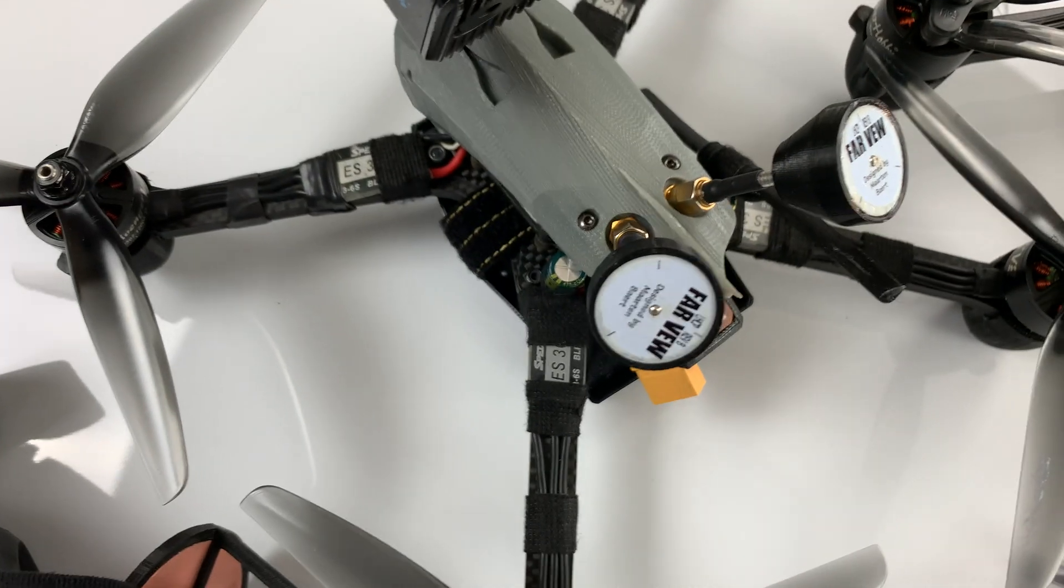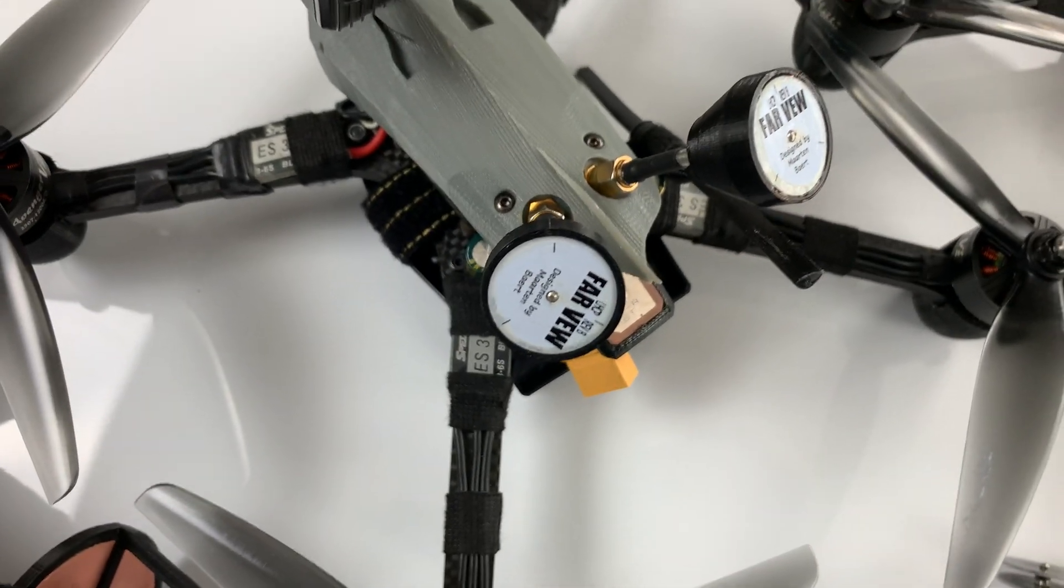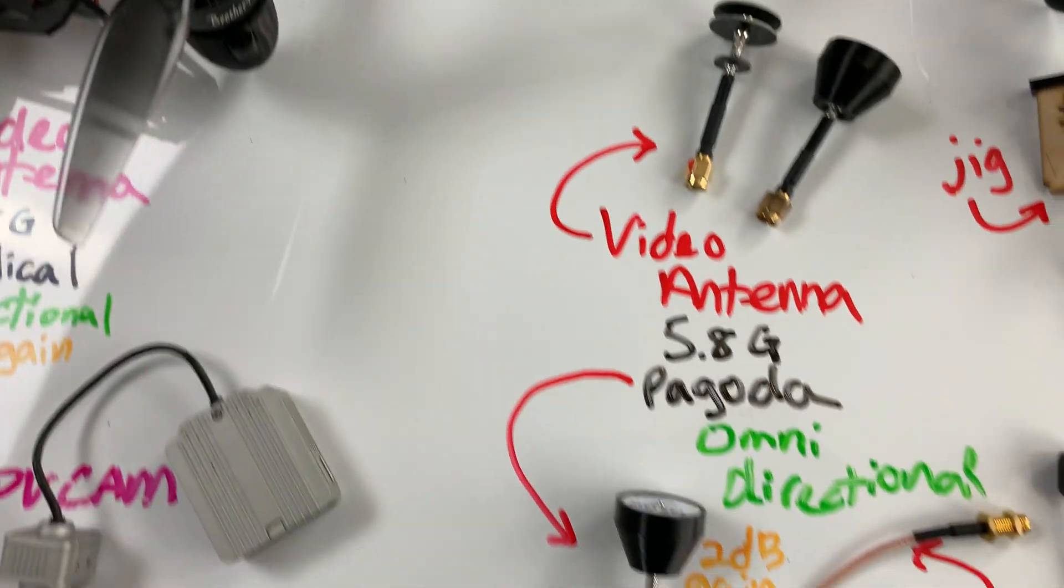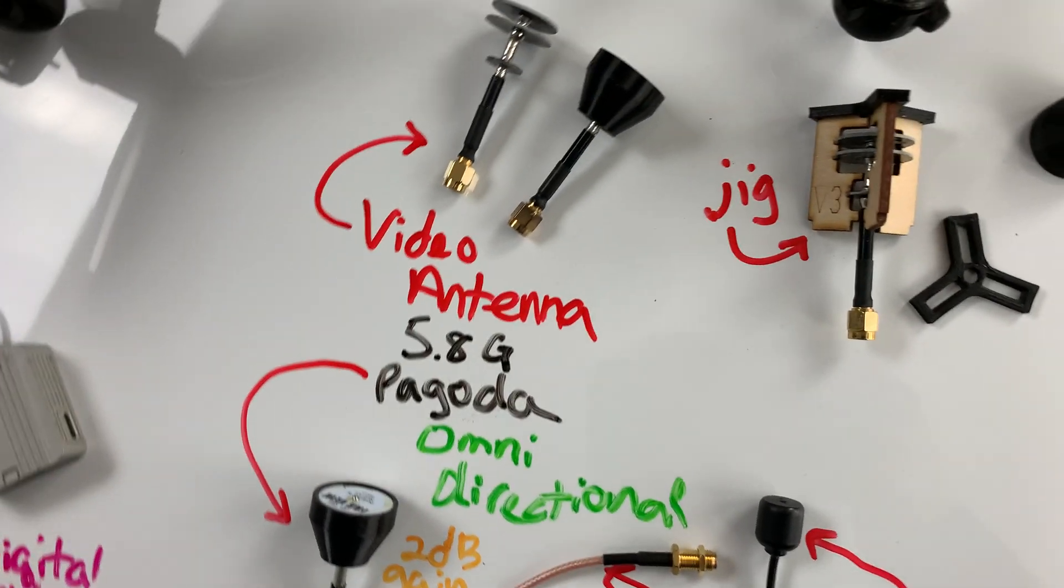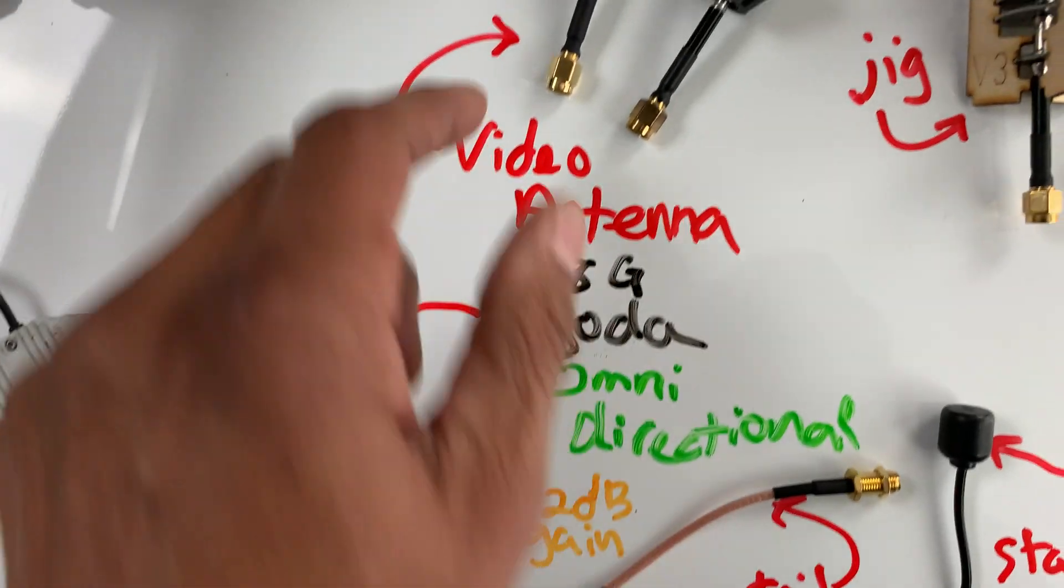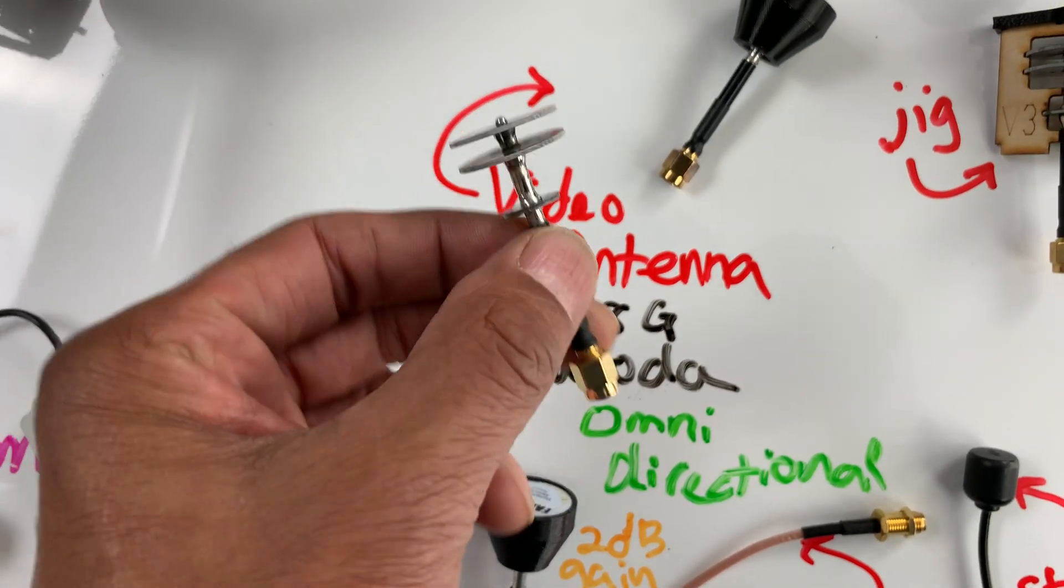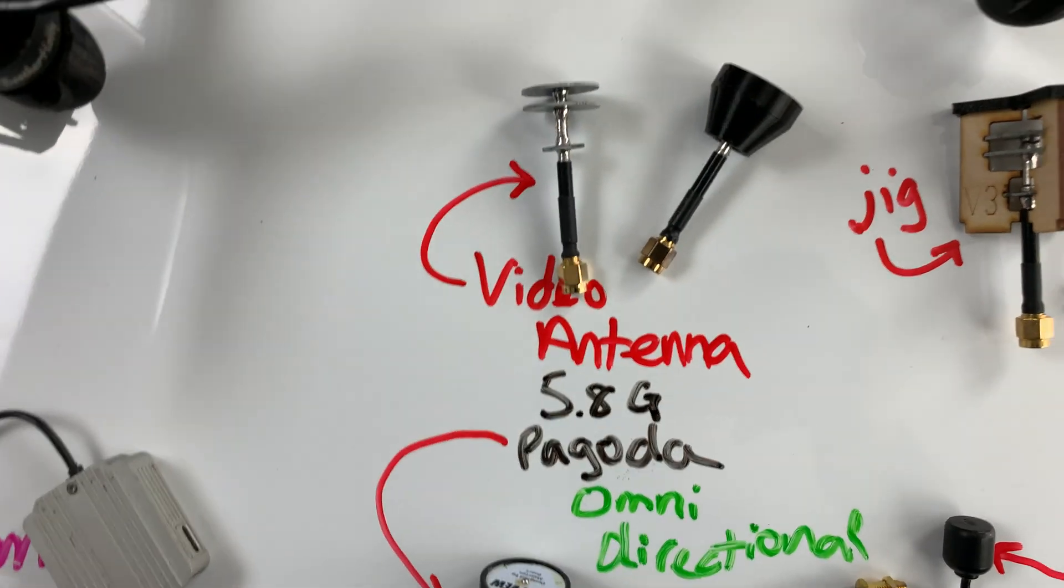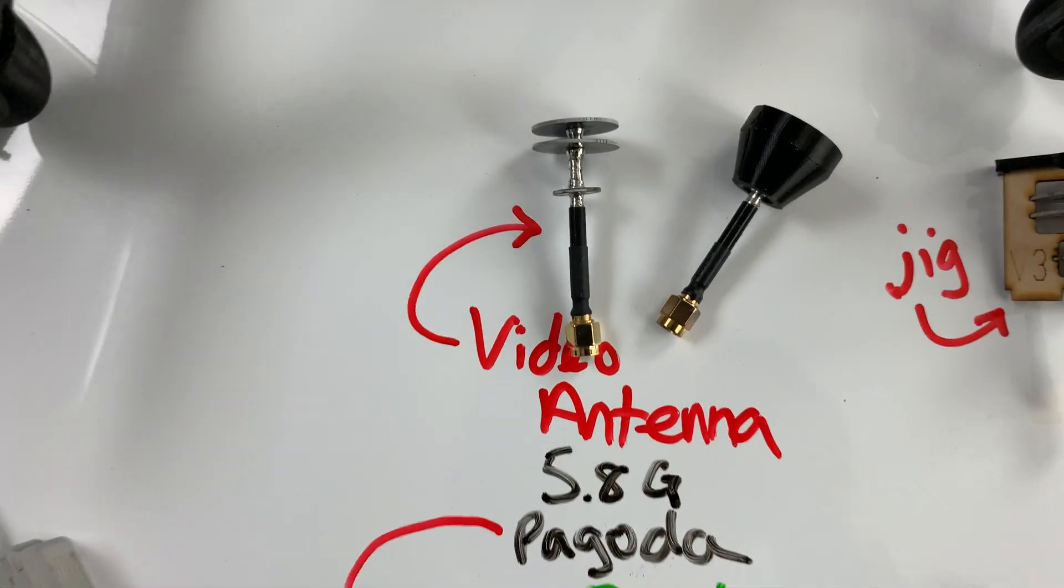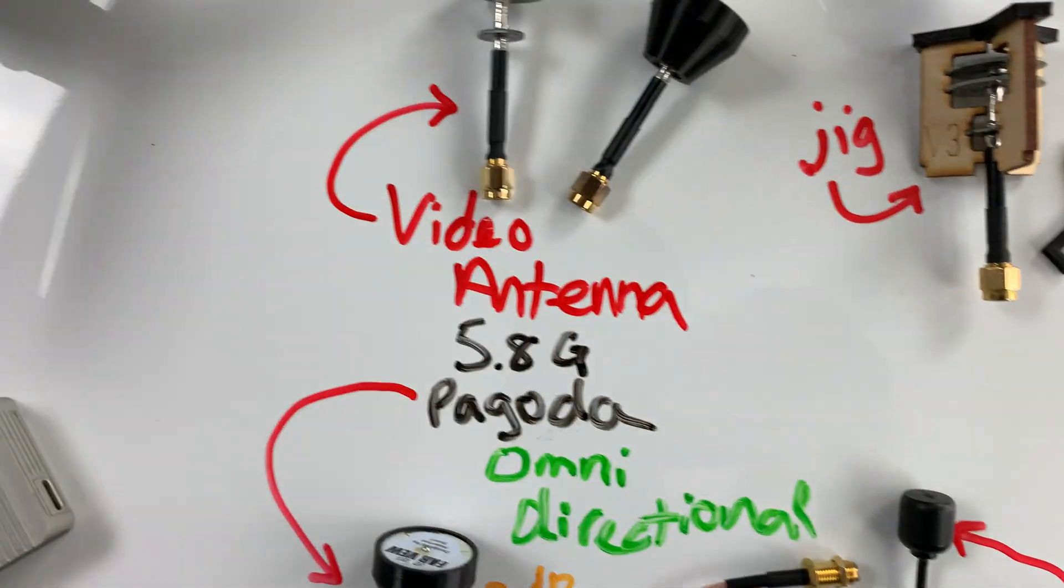So on a drone, you have these antennas on the back. So I used Farview antennas for a long time, and then Farview is now out of business. So what I've been doing is I've been buying these cheapo video antennas from AliExpress and remanufacturing them to be a lot higher quality. I'll go into a video about that later.